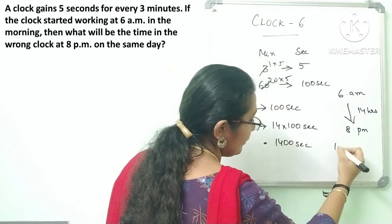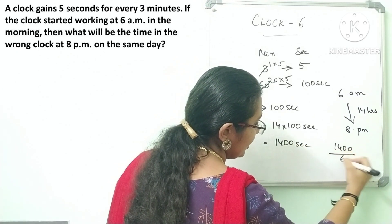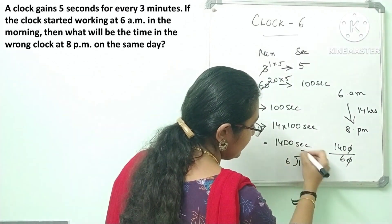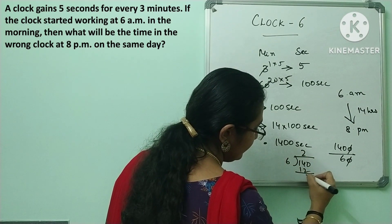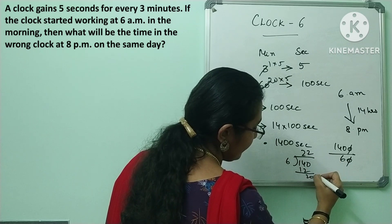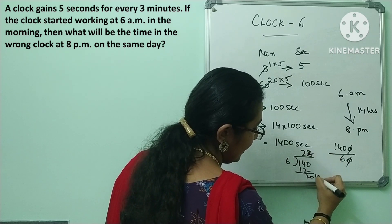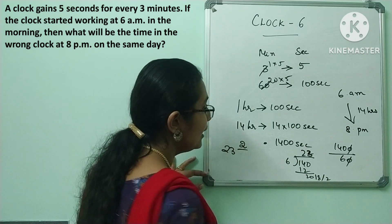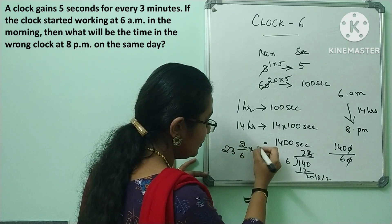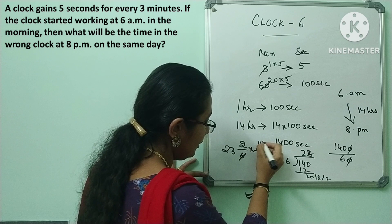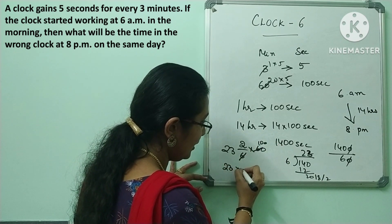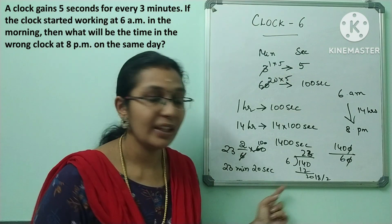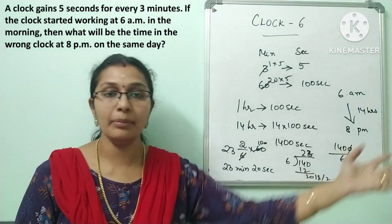Now convert 1400 seconds: 1400 divided by 60 — 23 times 60 is 1380, remaining 20 seconds — so the gain is 23 minutes 20 seconds. So the wrong clock at actual time 8 pm will show 8 hours 23 minutes 20 seconds, that is 8:23:20 pm.